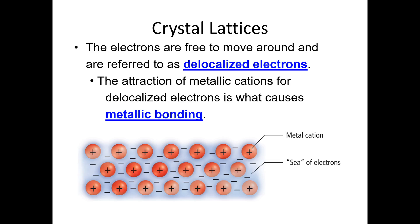Because these electrons are in the spaces in between, they are free to move around. We call them delocalized, meaning they do not have a specific location — they can move wherever they choose. This is what allows metals to have many unique properties, like conducting electricity. The attraction between the positively charged metal cations and that sea of electrons — positive attracted to negative — is what we call metallic bonding.